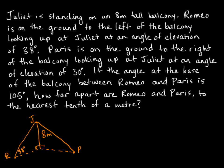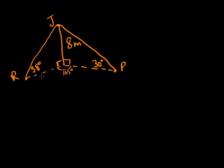We can safely assume the balcony is built at a 90-degree angle to the ground. The angle at the base of the balcony between Romeo and Paris is 105 degrees. The distance we're looking for — between Romeo and Paris — we'll call x. Romeo and Paris are both looking up at Juliette on top of the eight-meter balcony, and we need to figure out how to solve for x.